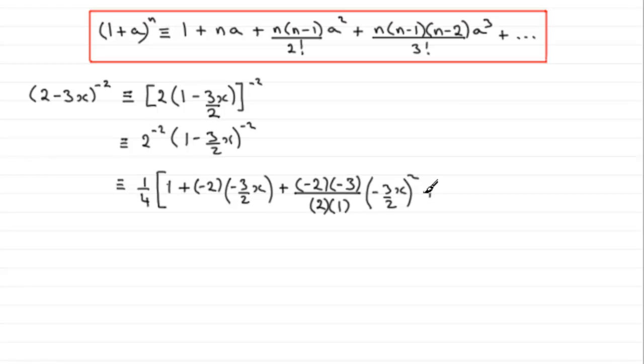And our last term, because we've got to expand it up to the term in x cubed, will be n, n minus 1, n minus 2. So we've got n which is minus 2, subtract another one from that so that's minus 3, and subtract another one from that, that's minus 4. And it's all over 3 factorial, in other words 3 times 2 times 1, multiplied by what is a cubed, is now minus 3x over 2 all cubed. And don't forget we've got plus and so on, even though we've got to go up to the term in x cubed.